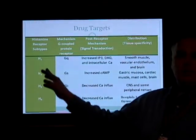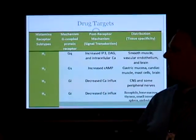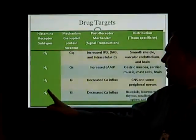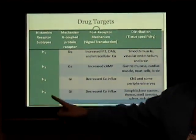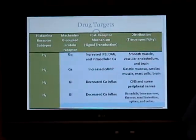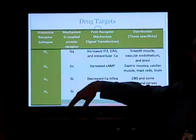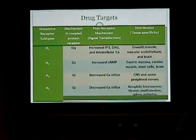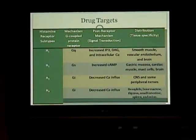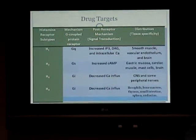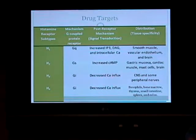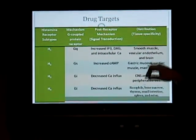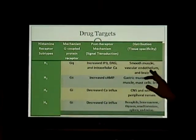There are currently four known histamine receptor subtypes: H1 being the most common, H2 mainly in the gut, H3 in the central nervous system, and H4 in the bone marrow, spleen, thymus, and small intestine. All four are G-protein coupled receptors. H1 is Gq-coupled, leading to an increase in IP3, DAG, and intracellular calcium. The end result is smooth muscle relaxation, vascular endothelium relaxation, and effects in the brain that are not yet well known. H2 is a Gs-coupled protein, leading to activation of increased cyclic AMP, which causes increased gastric mucosa secretion.